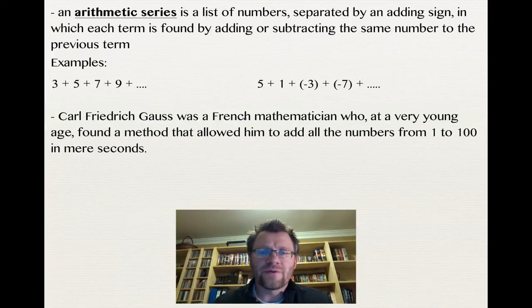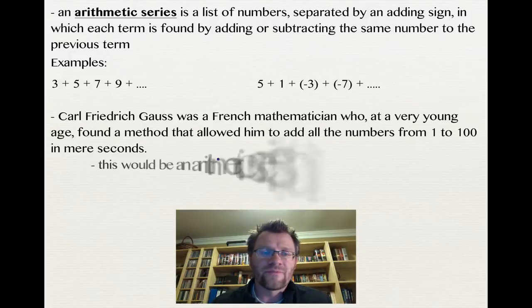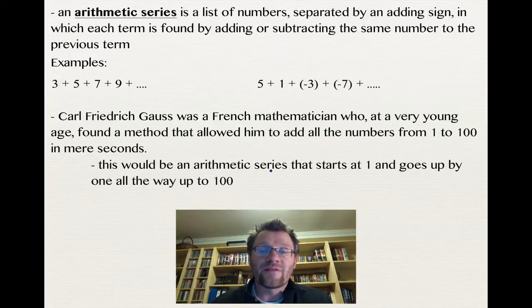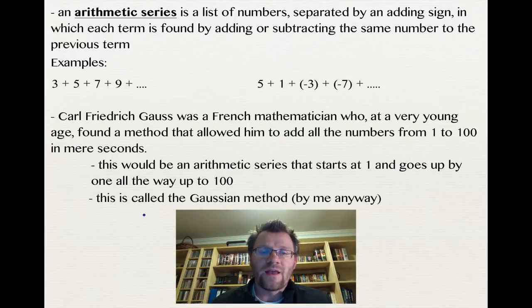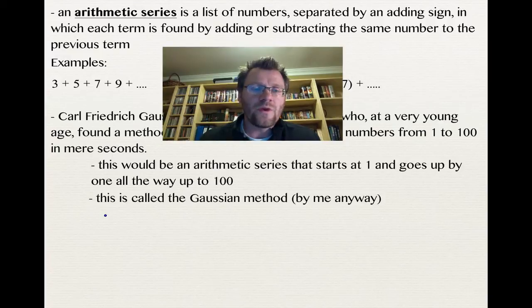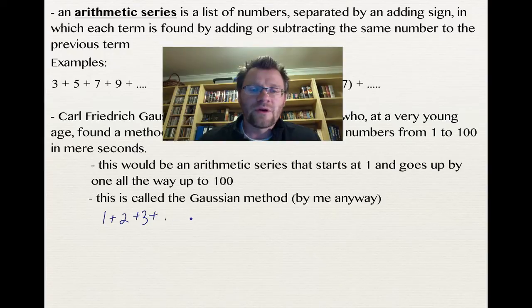Carl Friedrich Gauss was a mathematician who, at a very young age, found a method that allowed him to add all the numbers from 1 to 100 in mere seconds. This is an arithmetic series that starts at 1 and goes up by 1 all the way to 100, and this is what I call the Gaussian method.